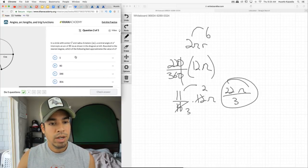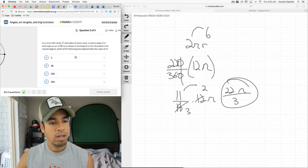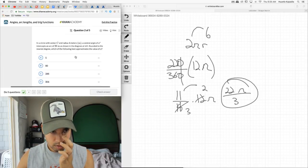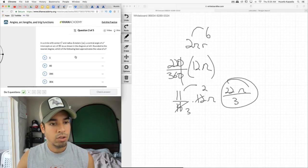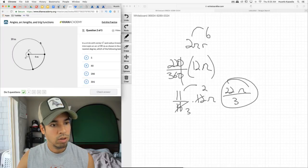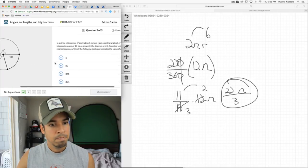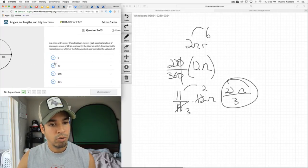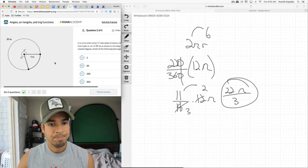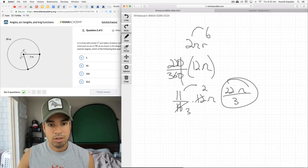Next. In a circle with center C and radius 4 meters, a central angle of x degrees intercepts an arc of 20 meters, as shown in the diagram to the left. So this whole thing here is 20. Rounded to the nearest degree, which of the following best approximates the value of x? We're solving for x.